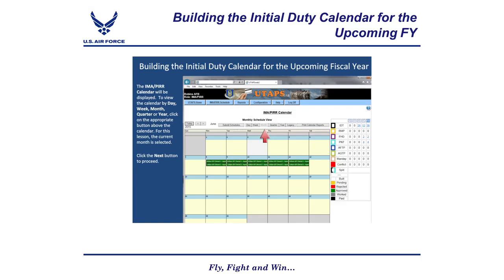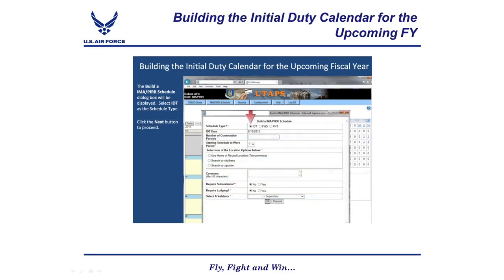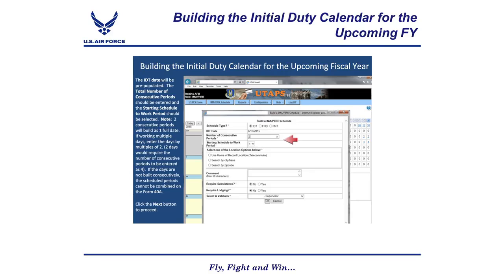For this lesson, the current month is selected. When the IMA PIRR calendar is displayed, double-click in the yellow area of the correct date on the calendar for which you wish to schedule an IDT. The Build a IMA PIRR Schedule dialog box will be displayed. Select IDT as the schedule title — the IDT date will be pre-populated. The total number of consecutive periods should be entered and the starting schedule work period selected. Note that two consecutive periods will be billed as one full date. If working multiple days, enter the days by multiples of two — two days would require the number of consecutive periods to be entered as four. If the days are not billed consecutively, the scheduled periods cannot be combined on the Form 40A.